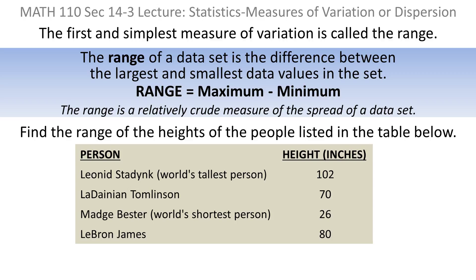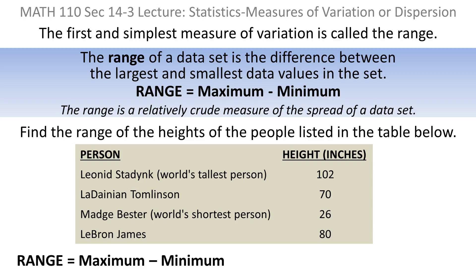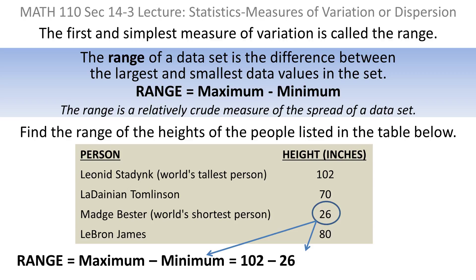Take an example. Suppose we're asked to find the range of the heights of the people listed in the table below. There are four people with their heights. The first is supposedly the world's tallest person at 102 inches, and you also have supposedly the world's shortest person at 26 inches. LeBron James and LaDainian Tomlinson are somewhere in between. To find the range, we only look at the largest and smallest — the maximum and minimum. So the range is the largest height, 102, minus the smallest height, 26 inches, giving a range of 76 inches — which is 6 feet 4 inches.